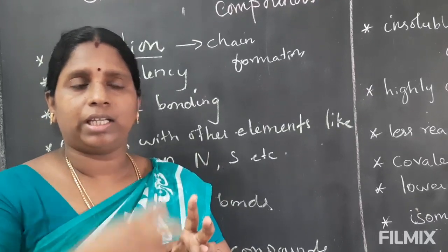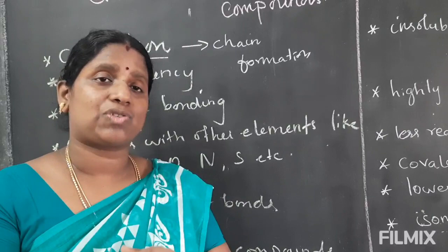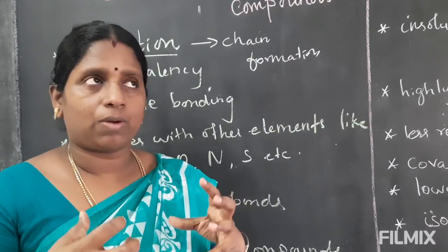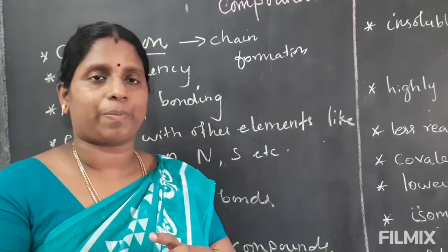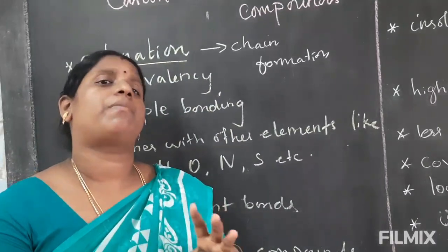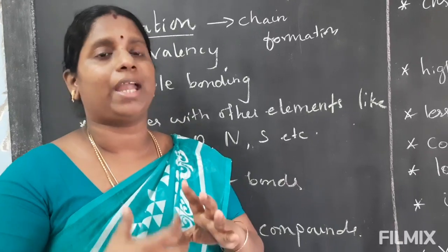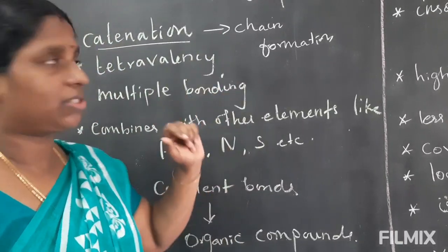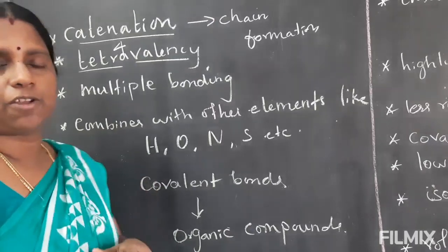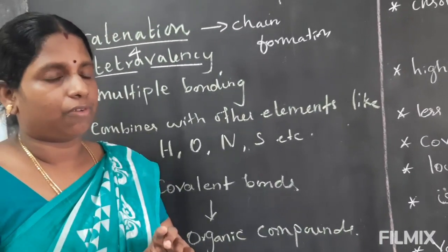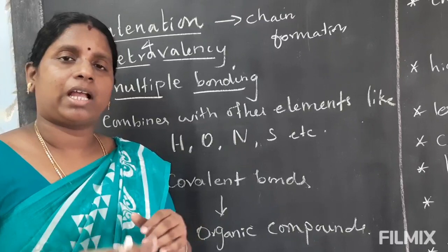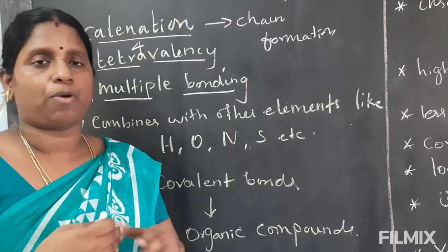These carbon and its compounds we have discussed in 9th standard also, as an introduction. What are the terms we are learning in this carbon? So catenation means carbon combines with other elements to form a compound. Tetra valency — carbon has the valency of 4; tetra means 4. And multiple bonding — bonding means single bond, double bond, triple bond. So carbon has multiple bonding.